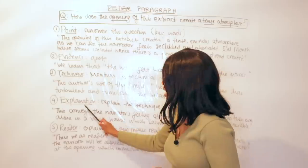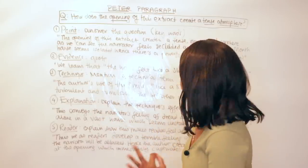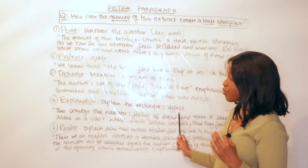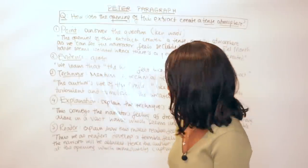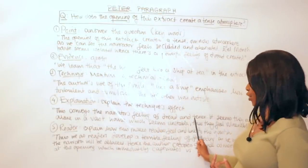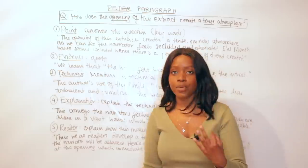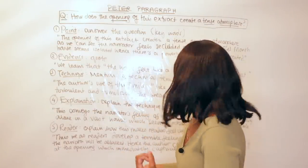Now let's move on to the E in my PETA, so this is the second E, which is Explanation. Explanation simply means you need to explain the effect of this technique. I will show you what I mean by explaining the effect of this technique: This conveys the narrator's feeling of dread and terror. So as you can see here, the effect that I'm showing is what does it show us about the character in this story?